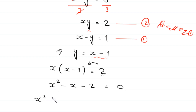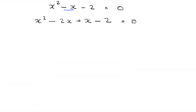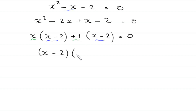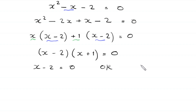This is a quadratic equation and is factorable. We split -x as -2x + x: x² - 2x + x - 2 = 0. Factoring the first two terms gives x(x - 2), and factoring the last two terms gives +1(x - 2). So (x - 2)(x + 1) = 0.